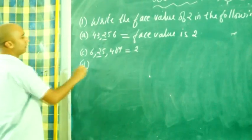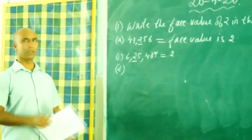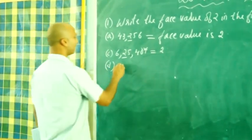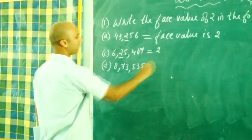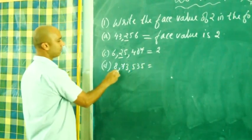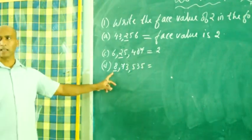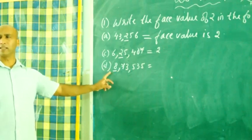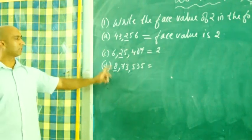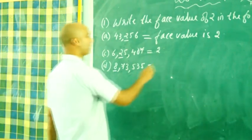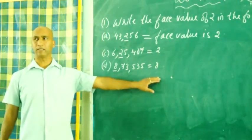Now I am giving you a third example which is not in the book, so you can get proper knowledge about it. Suppose this is a number, 8,73,535. And suppose this number is underlined. So 8 is underlined. 8 is in what case? It is in lakh space. But you won't have to see the place, just see the digit. What is the digit? 8. So its face value will be 8.